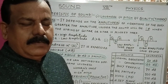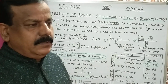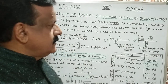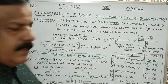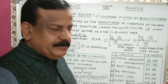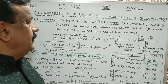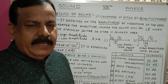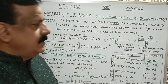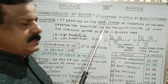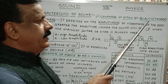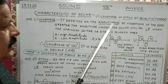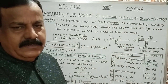Hello students, I am again here with a new video on the same chapter — the sound chapter. Today we will discuss about the characteristics of sound. There are three characteristics of sound: loudness, pitch, and quality. Quality is also known as timbre. So one by one we will discuss all three characteristics.